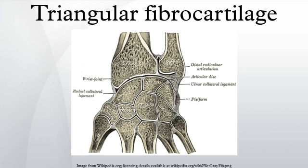The role of the TFCC in supination and pronation is a matter of dispute. Some authors concluded that the dorsal fibers of the TFCC tighten in pronation and the palmar fibers in supination. Both parties are in fact right, because the RULs consist of two ligaments and each ligament has two components: the superficial and deep ligament. During supination, the superficial palmar and the deep dorsal ligaments tighten, preventing palmar translation of the ulna. In pronation this is reversed: the superficial dorsal and the deep palmar ligaments tighten, preventing dorsal translation of the ulna.